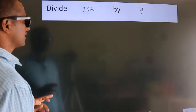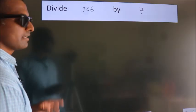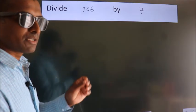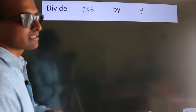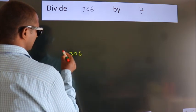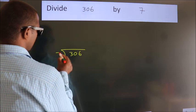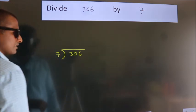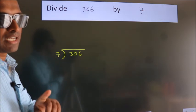Divide 306 by 7. To do this division, we should frame it in this way. 306 here, 7 here. This is your step 1.